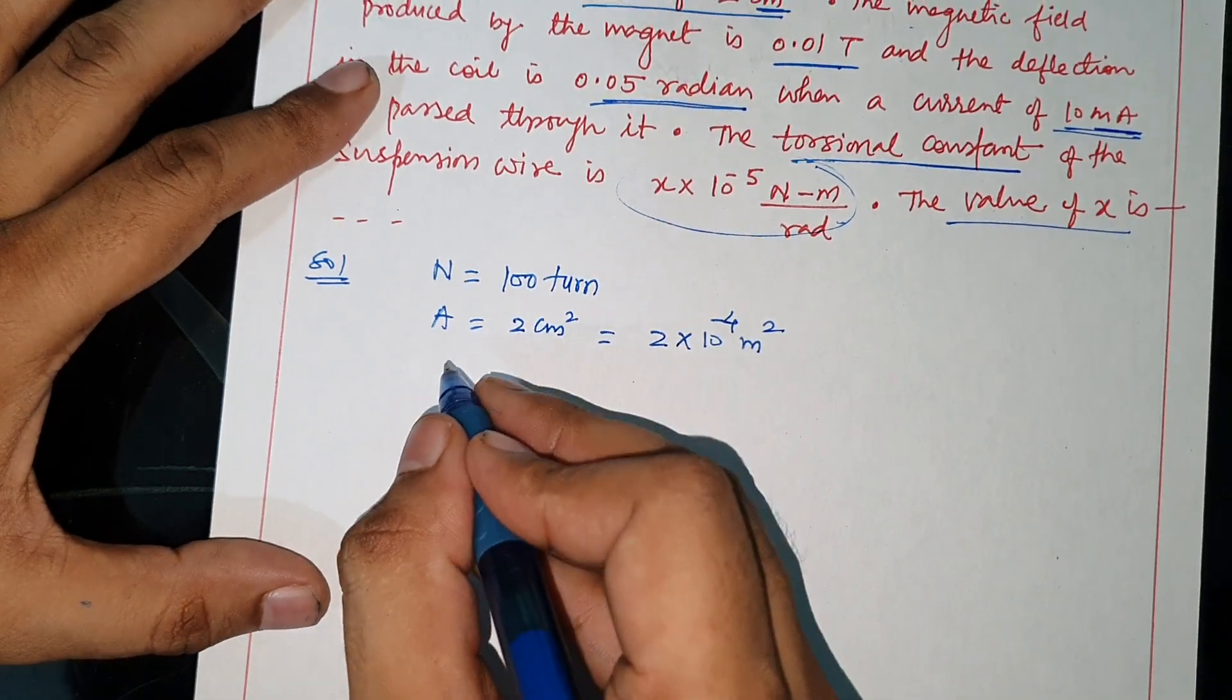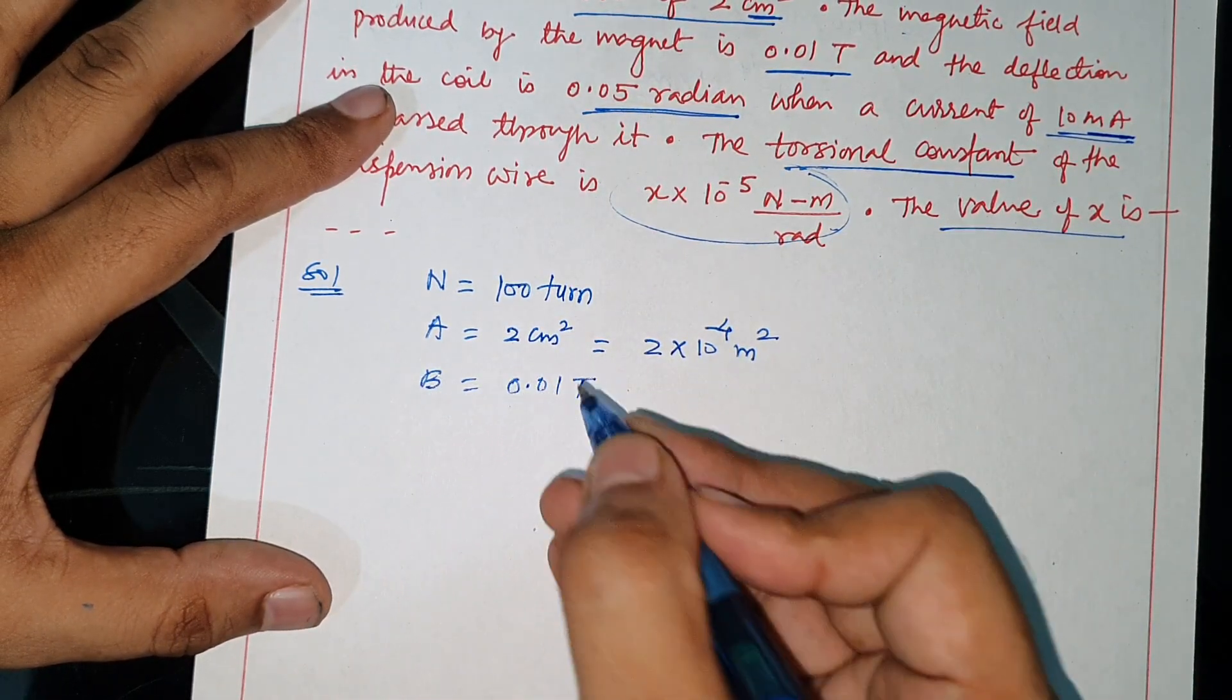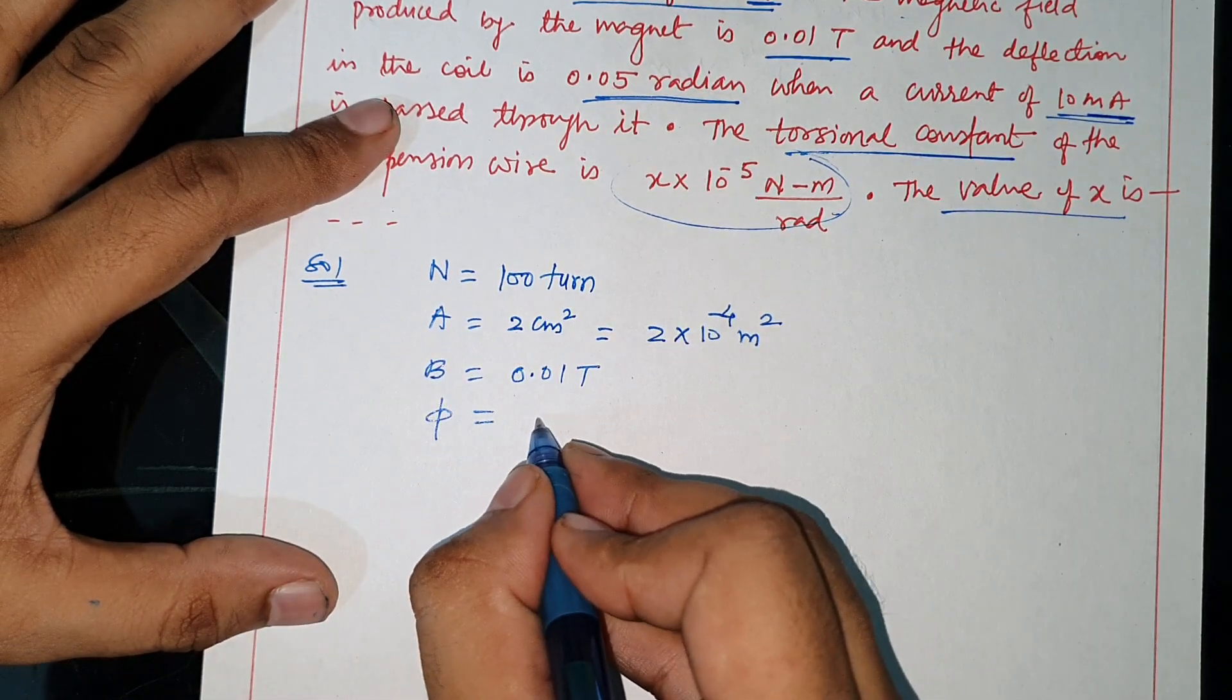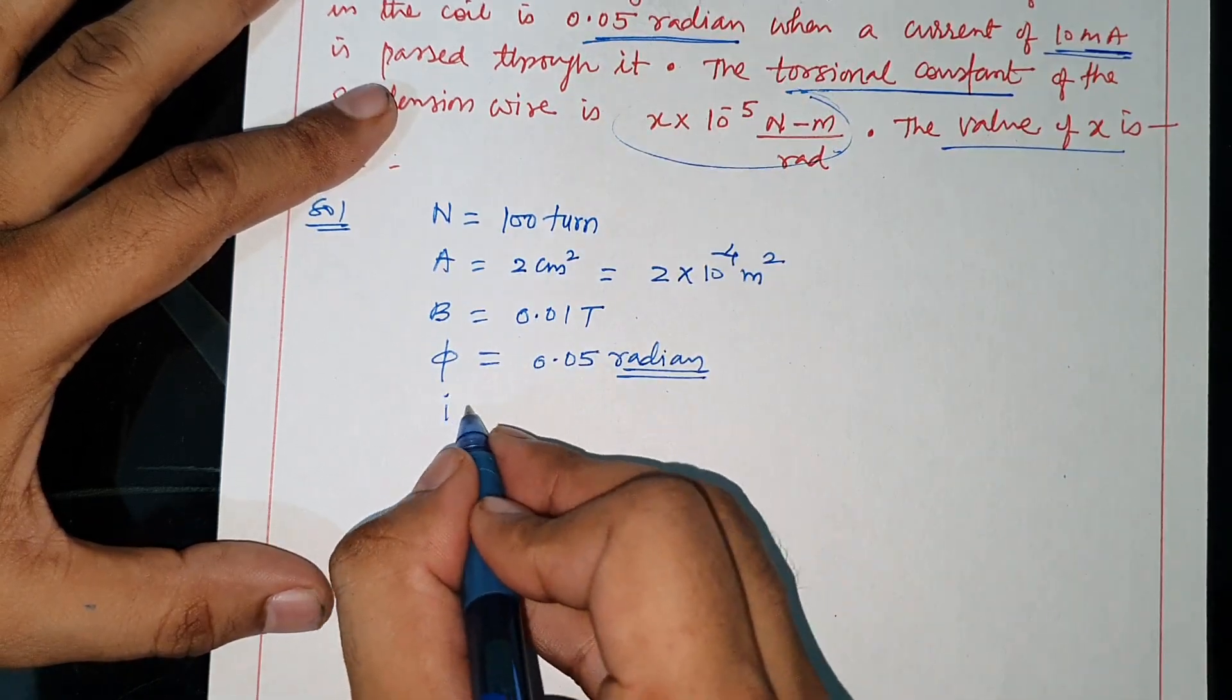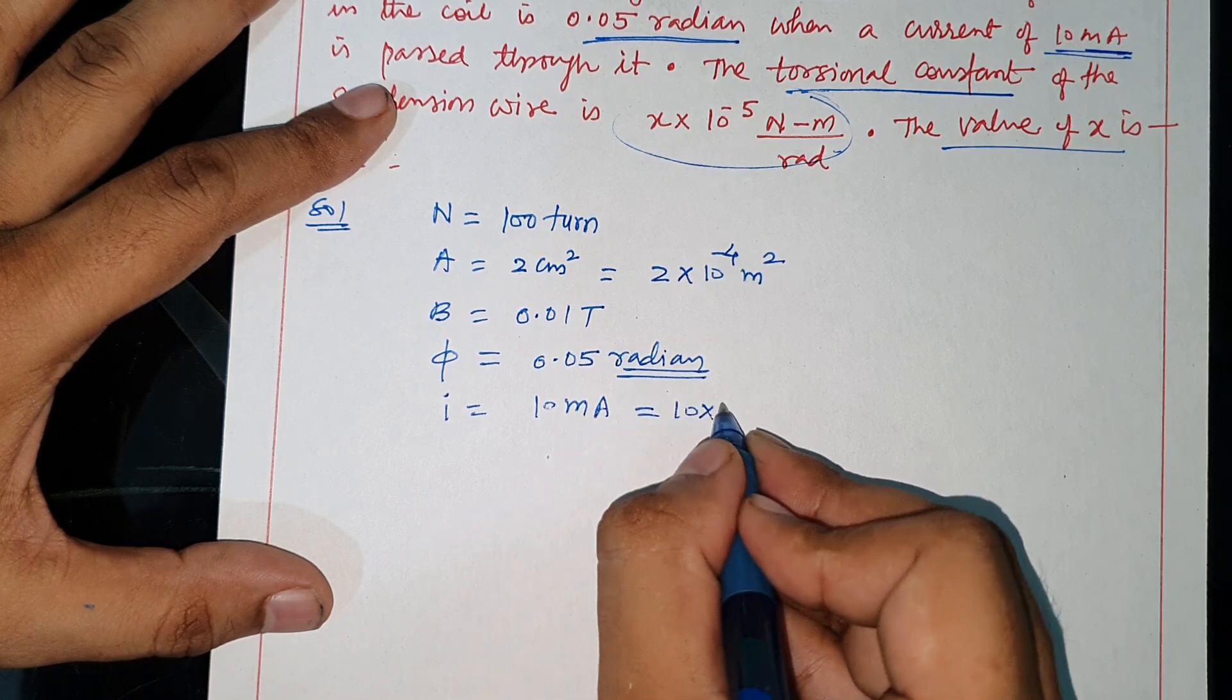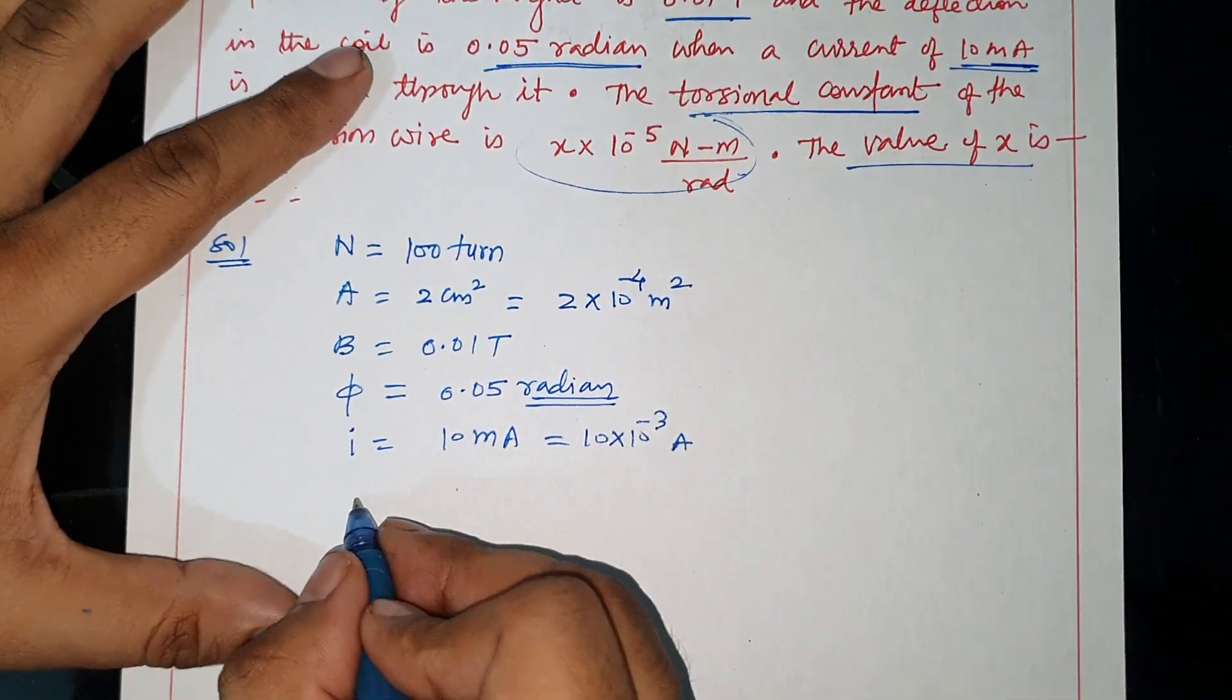Okay, area we changed from centimeter to meter. Magnetic field B = 0.01 Tesla. Deflection of the coil phi = 0.05 radian. Current is I = 10 milliampere, let's change it to 10 into 10 power minus 3 ampere. One milliampere equals 10 power minus 3 ampere.